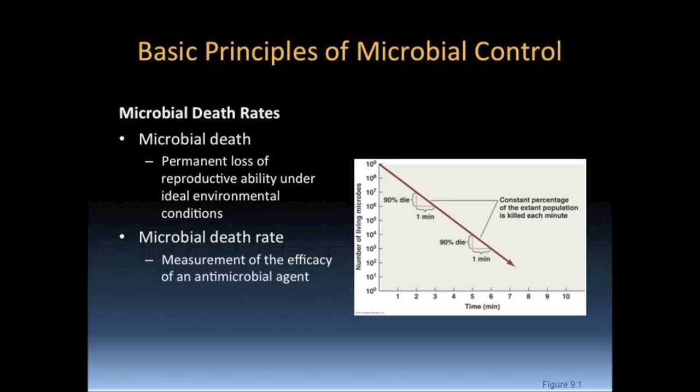Many microbicidal agents target the metabolic activities of the cell. Therefore, young actively dividing cells die more quickly than older, less metabolically active cells. However, eventually a point is reached in which survival of any of the cells is unlikely. The death of a microbial population in response to a technique or chemical agent can be plotted. Death is observed to be logarithmic as time or concentration of the agent is increased. Such a plot allows one to measure the efficacy of an antimicrobial agent.